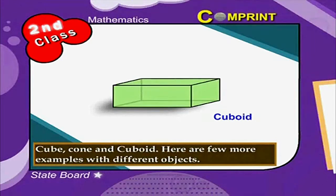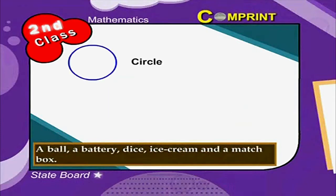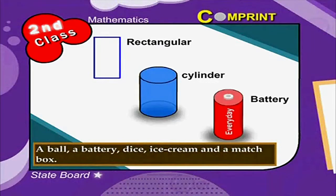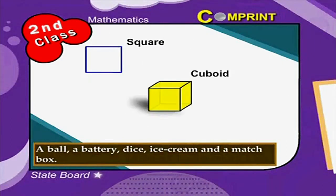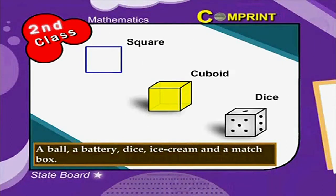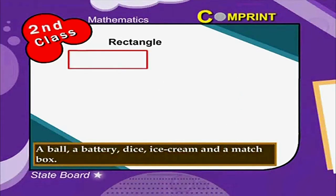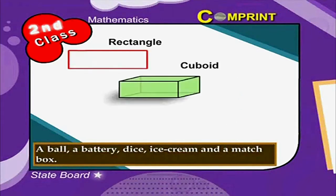Here are a few more examples with different objects: a ball, a battery, dice, ice cream, and a matchbox.